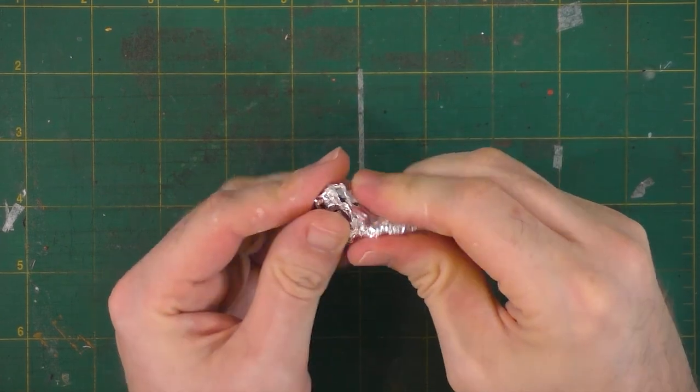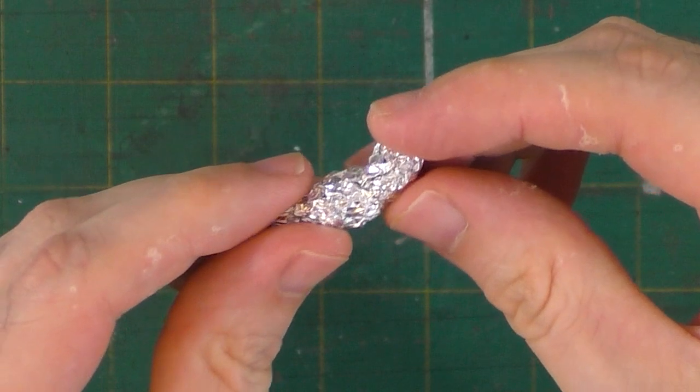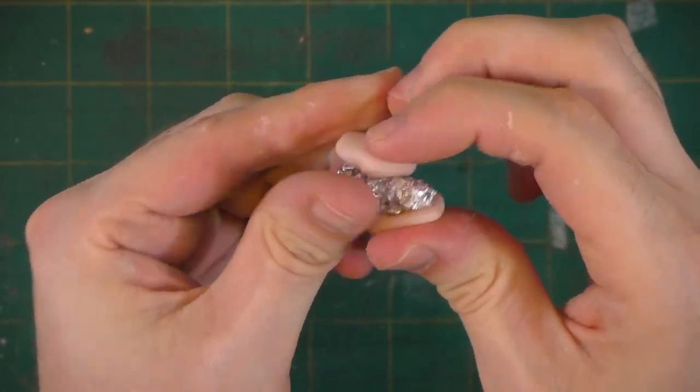First for making a polymer clay bird, we'll wad up some tin foil into a shape that looks like a bird's body. We're making a crow, but you could really use this process to make whatever bird you like.